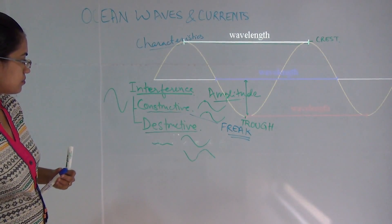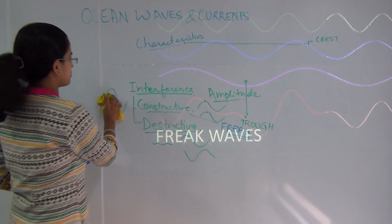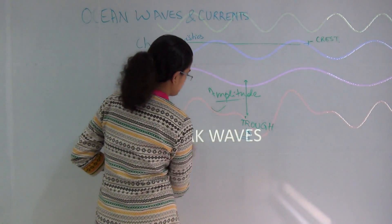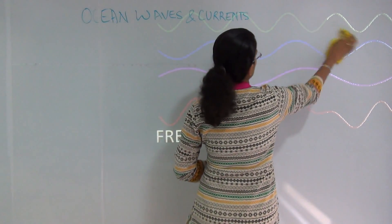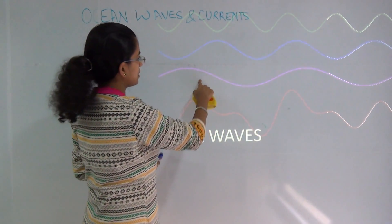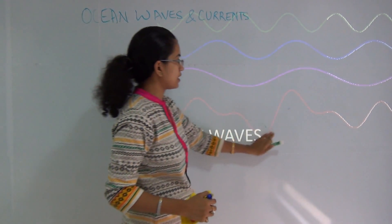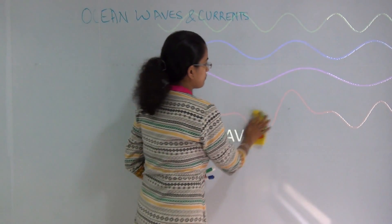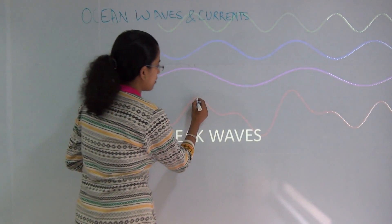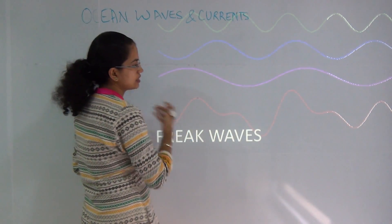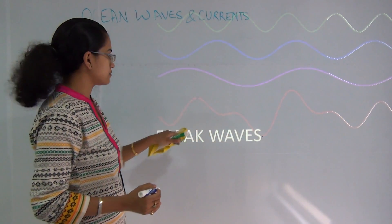Moving to the next slide — this is what a freak wave looks like. As you can see, there are numerous waves flowing through — three different waves. When we sum these waves, we can find what are known as freak waves, which have higher crests and deeper troughs compared to the remaining three waves.